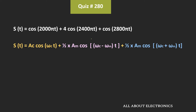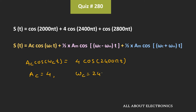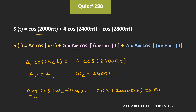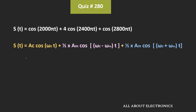So, equating this term with the given modulated signal, we can say that AC*cos(ωC*T) is equal to 4 times cos(2400π*T). From this we can say that AC is equal to 4 and ωC is equal to 2400π. Similarly, if we equate the lower sideband term, then (AM/2) times cos of (ωC − ωM)*T is equal to cos(2000π*T). That means AM divided by 2 is equal to 1, so the amplitude of the message signal AM is equal to 2. That means the amplitude of the carrier signal is 4 and the amplitude of the message signal is 2.